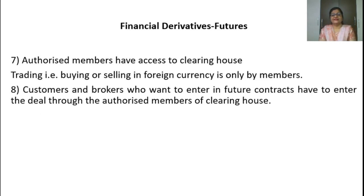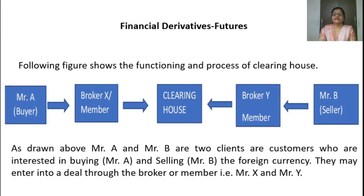It is not directly done by two parties — it is done through a clearing house. Authorized members have access to the clearing house, so buying and selling in foreign currencies is only by the members. Customers and brokers who want to enter a future contract have to enter a deal through an authorized member of the clearing house — just like your share market, where you deal through brokers.